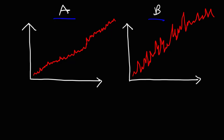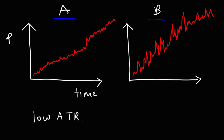Consider the price charts of stock A on the left and stock B on the right, with price on the y-axis and time on the x-axis. Both of these stocks are in an uptrend. Now, which of these two stocks would have a higher ATR value? The one on the left has a low average true range value, and the one on the right has a high average true range value.